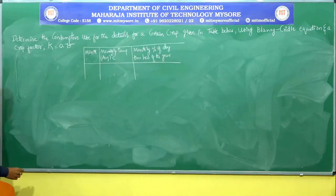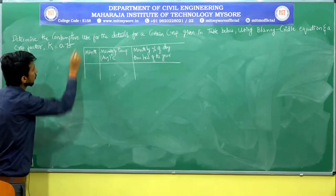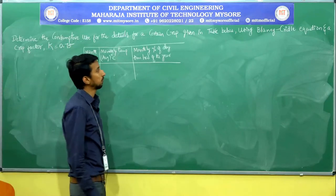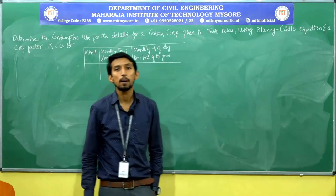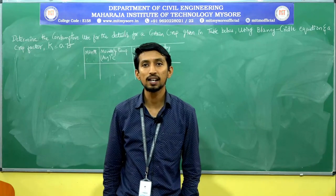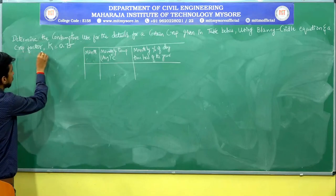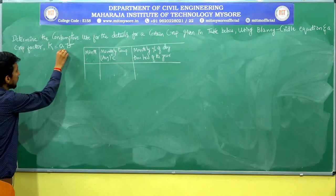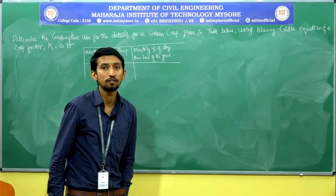The first problem is: determine the consumptive use for the details of a certain crop given in the table below using Blaney-Criddle's equation. The crop factor K equals 0.75.